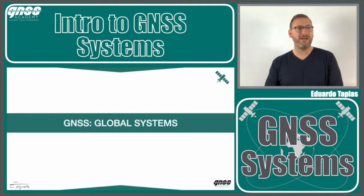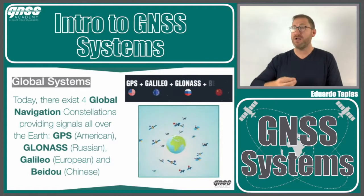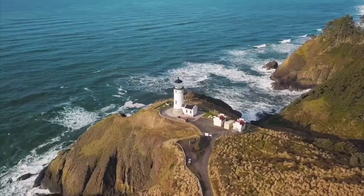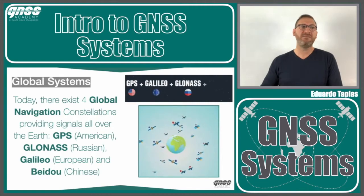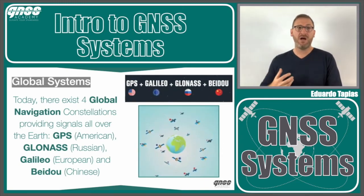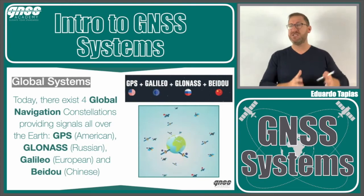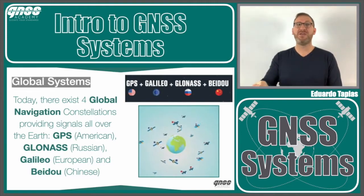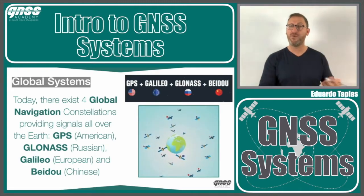Let's talk about global systems — the global constellations we have today. Global constellations give services globally, meaning even if you are in China, the United States, Africa, or Europe, you have the same level of performance everywhere. We have four global constellations: GPS (the American one), Galileo (the European one), GLONASS (the Russian one), and BeiDou (the Chinese one). These are open and free for users.